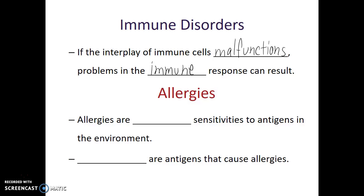Allergies, which is the first of these immune disorders that we'll talk about, can also run that range. Allergies are abnormal sensitivities to antigens in the environment. We call those antigens in the environment allergens.